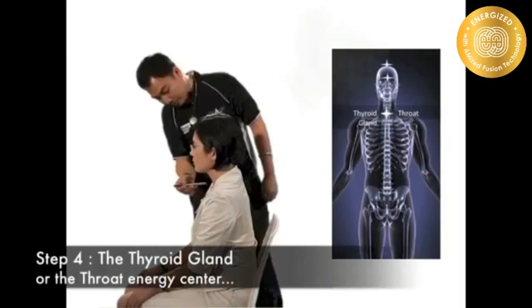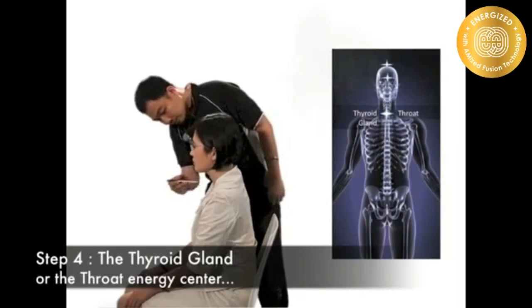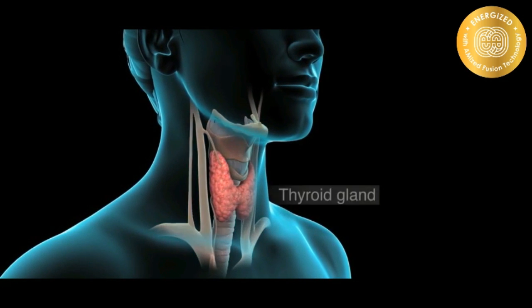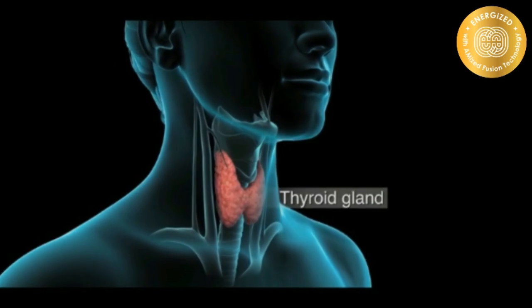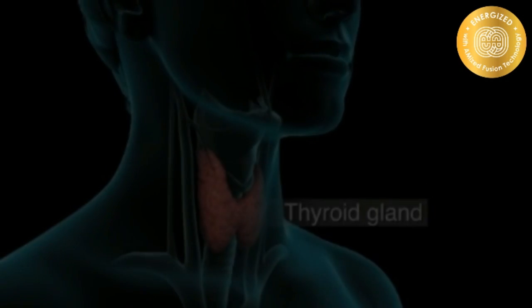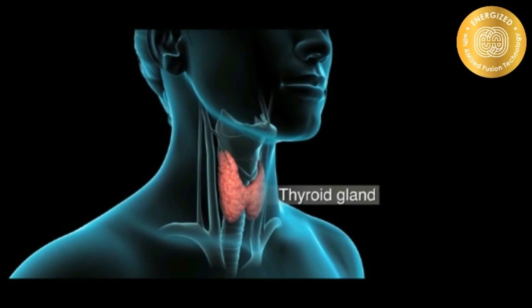Step 4: The thyroid gland, or the throat energy center. The thyroid gland T4 stimulates metabolism in most body tissues — think of it as the energy bank. T3 helps keep cholesterol in balance.